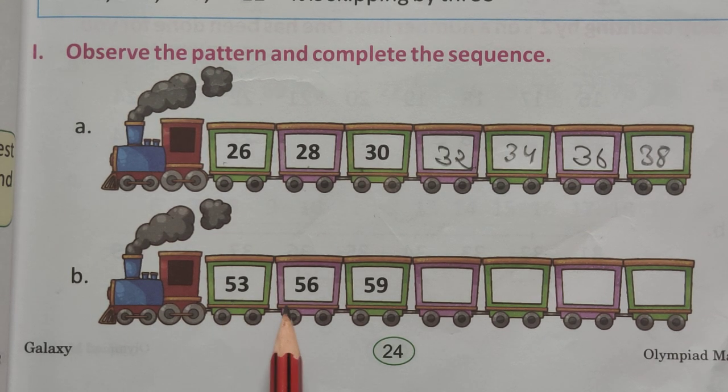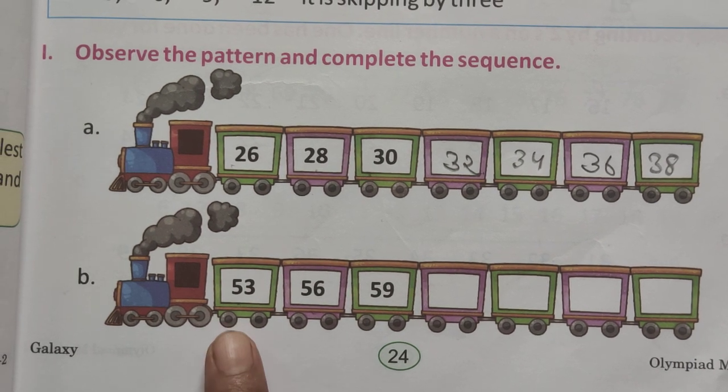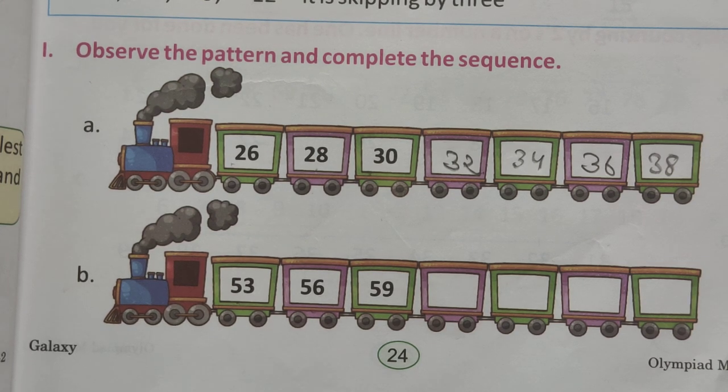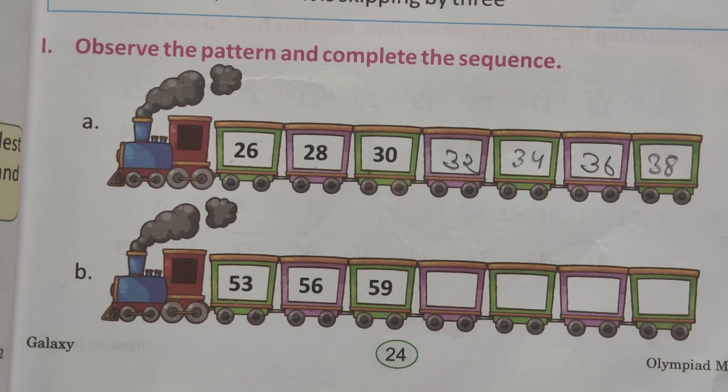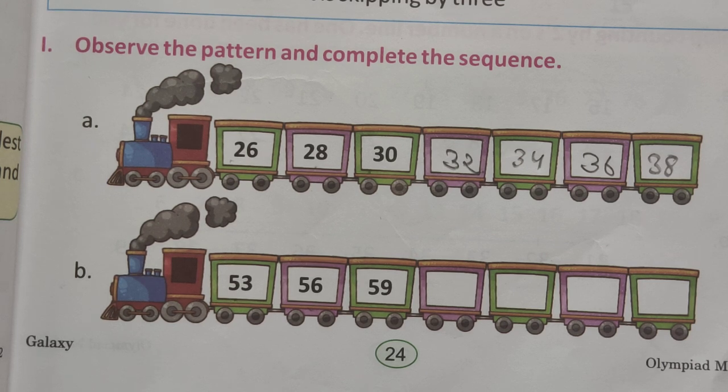Next one is, 53, 56. So, count the number, 53 to 56. Count the finger, 54, 55, 56. So, skip by three numbers.